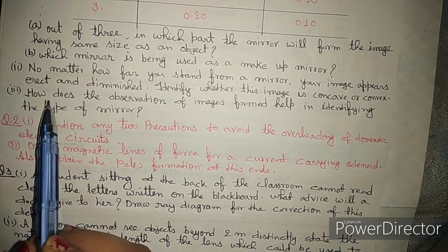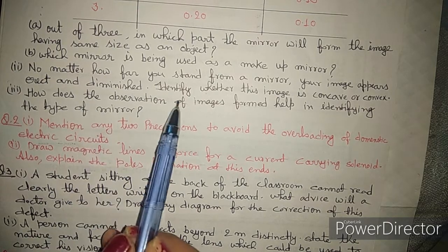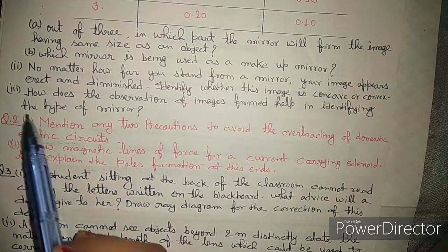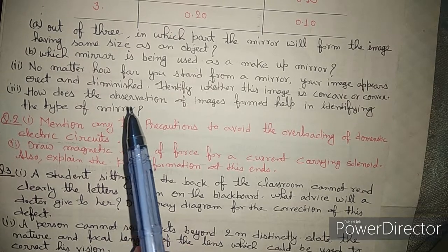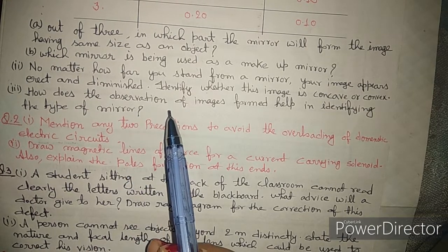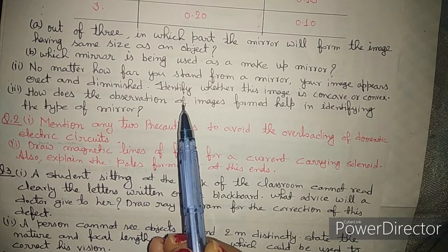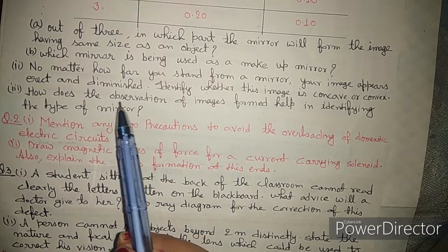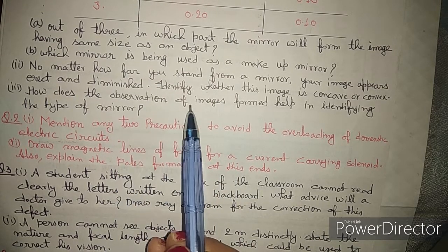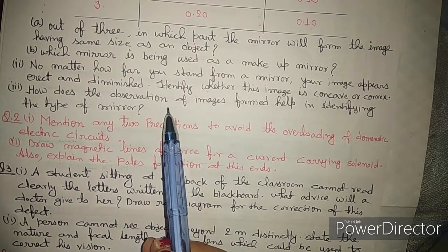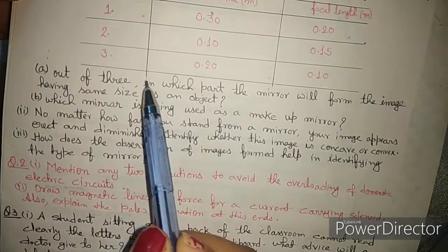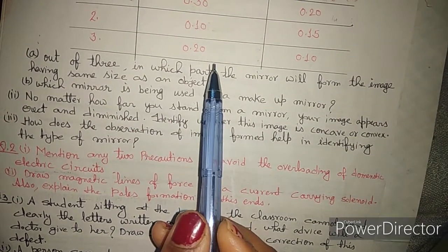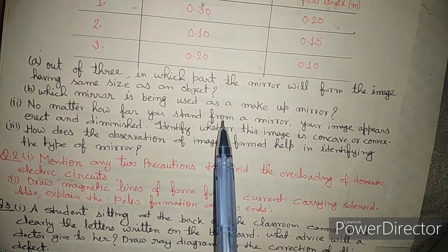The next part asks: how does the observation of the image help identify the type of mirror? You need to write how we can identify whether the mirror is plane, concave, or convex based on observation. These three questions are five-mark questions and you need to answer all of them.